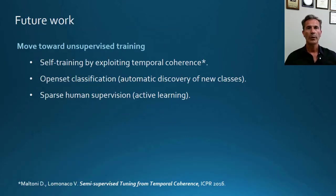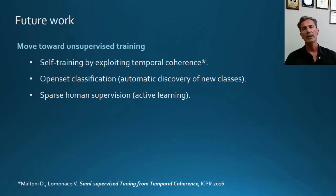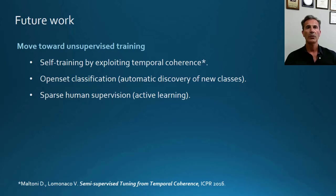Finally, in the future we intend to move toward unsupervised or weakly supervised training. In the application shown at the beginning, all training steps are supervised by the user. It would be nice, for example, for a robot to automatically trigger learning as it sees new or known objects — this requires moving to open set classification and possibly self-training approaches. Using videos instead of single frames would be very useful because you can exploit temporal coherence as a surrogate signal and fuse confidence from consecutive frames. I think Core50 is an interesting dataset for all this development, so I invite you to use it. Thank you very much for your attention.